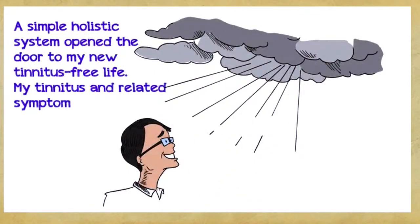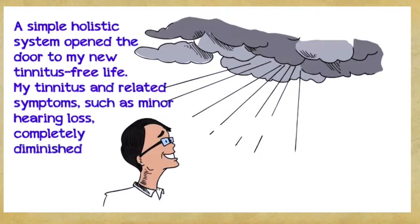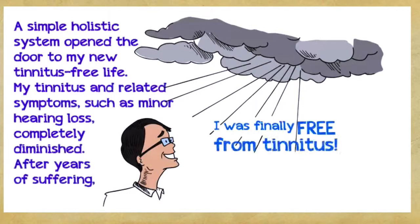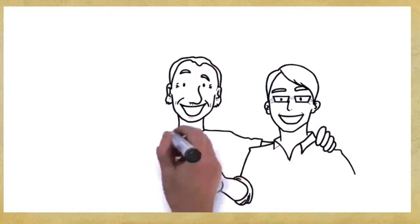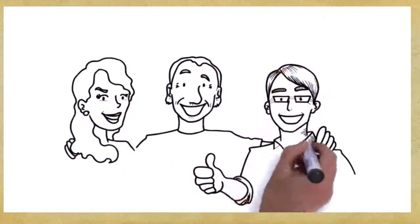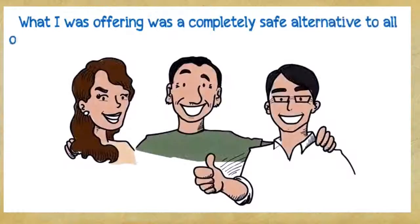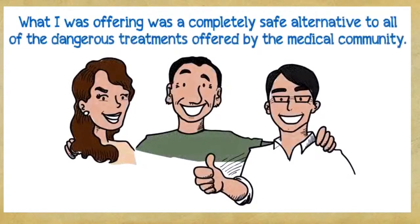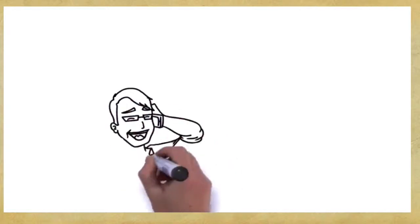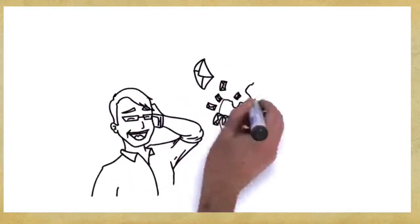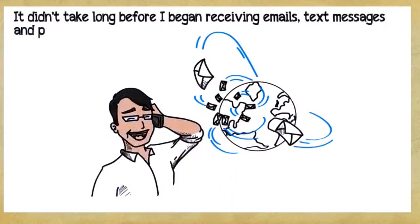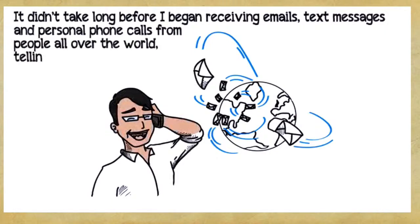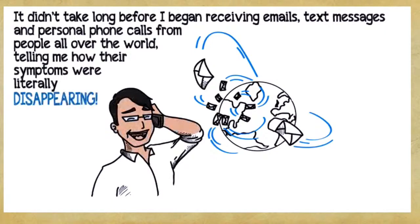After countless rounds of trial and error, useless treatments, disappointments, and agony, a simple holistic system opened the door to my new tinnitus-free life. My tinnitus and related symptoms such as minor hearing loss completely diminished. After years of suffering, I was finally free from tinnitus. Since I'd been on multiple blogs and various tinnitus groups for years, it wasn't difficult to find other people willing to give my treatment a try. I sent off my five-step protocol to several dozen tinnitus sufferers and waited. It didn't take long before I began receiving emails, text messages, and personal phone calls from people all over the world telling me how their symptoms were literally disappearing.